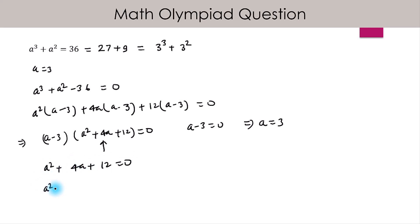We can write it as a² + 4a + 4 + 8 = 0. This implies (a + 2)² = -8.